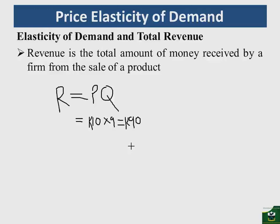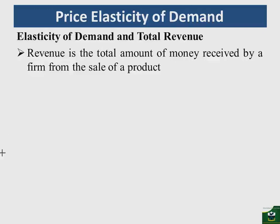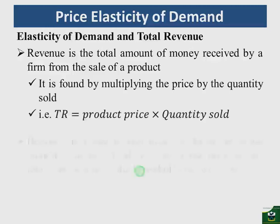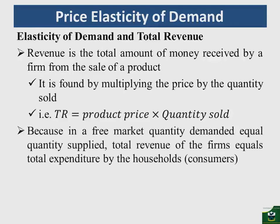What we want to see here is the relationship between revenue and the elasticity of demand. Revenue is found by multiplying price times quantity. In a free market, quantity demanded must always equal quantity supplied to maintain equilibrium, which means the total revenue of the firm will equal the total expenditure by households.